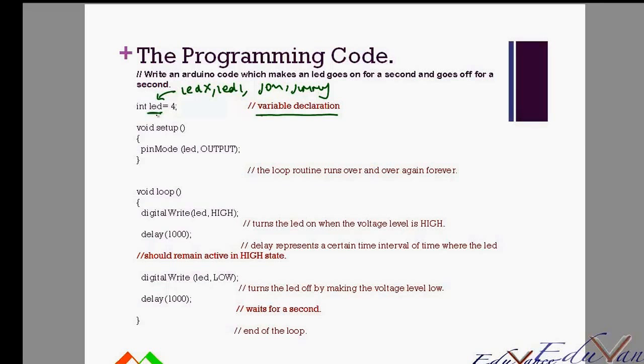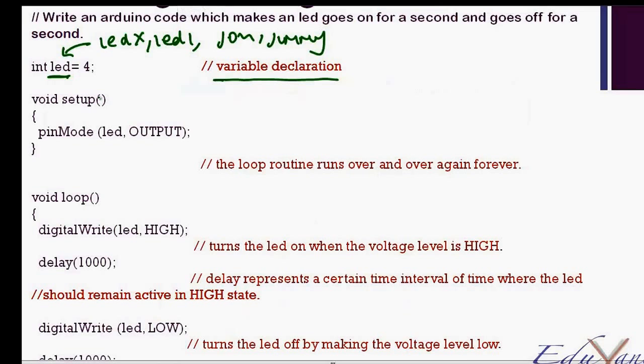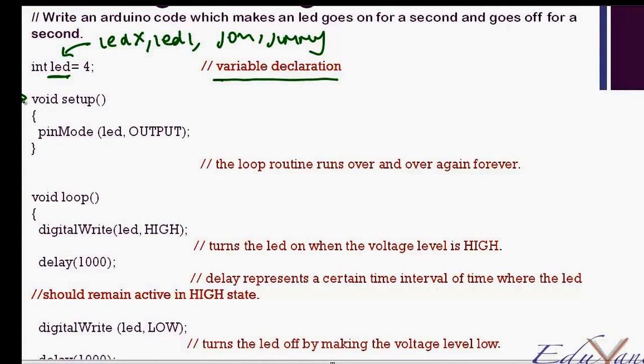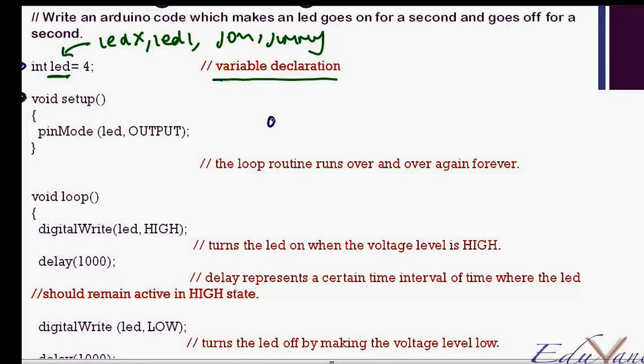Then, as I said, first we specify using the setup after we do the variable declaration. So this part was the variable declaration. This is the setup, where we specify that the pin will it be of the type output or will it be of the type input. In the next lab we will see the input function. Here we are seeing the output function.